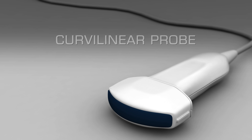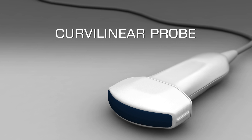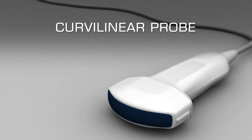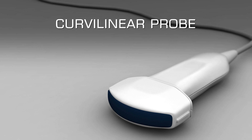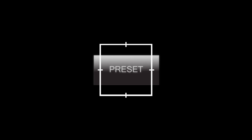The ideal transducer for assessing structures within the abdomen is a curvilinear array probe with a frequency range of 2 to 5 megahertz. Select the abdomen preset on the ultrasound device.